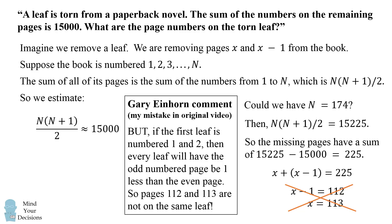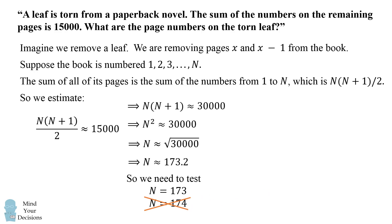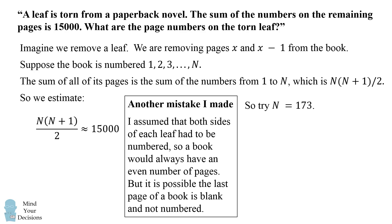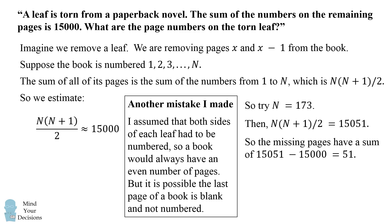So that leaves us to consider the other possibility. What if n equals 173? Now originally I wrongly excluded this answer. I assumed that both sides of each leaf had to be numbered, so a book would always have an even number of pages. But it is possible that the last page of a book is blank and not numbered — that doesn't contradict anything in the original wording of the problem. So what if n equals 173? Then the sum of all the page numbers is equal to 15,051. This means the two pages would have a sum of 51, and we can readily solve that those two pages will be 25 and 26. So this is the correct answer to the problem. Did you figure it out?